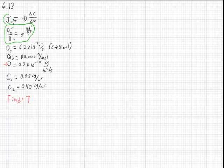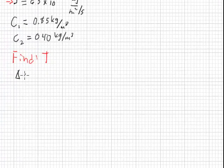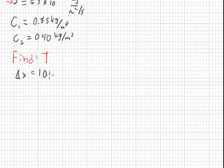Here we go. We've got this equation where we have the thickness, we've got the difference between the concentrations, and we have the flux, so we can solve for the diffusion coefficient. And did not write down the thickness. It says it's a steel plate of 10 millimeters. So delta x equals 10 millimeters.